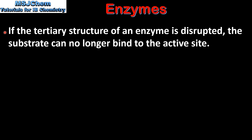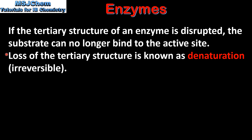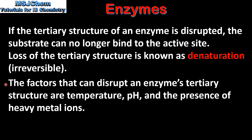If the tertiary structure of an enzyme is disrupted, the substrate can no longer bind to the active site. This leads to a decrease in the activity of the enzyme. The loss of the tertiary structure is known as denaturation, which is irreversible. The factors that can disrupt an enzyme's tertiary structure are temperature, pH, and the presence of heavy metal ions.